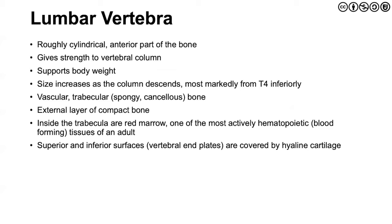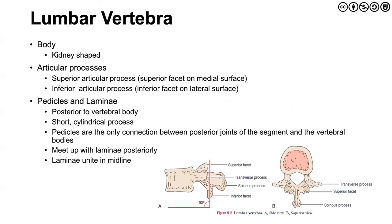The superior and inferior surfaces are covered by hyaline cartilage. The body is more kidney-shaped. The articular processes are paired with both superior and inferior. The pedicles and lamina are posterior to the vertebral body — they're short, and the pedicles are the only connection between the posterior joints of the segment and the vertebral bodies. The lamina unites at midline where we see our spinous process, and is an area where we can provide force during manual intervention. The lamina also comes into play with a laminaplasty — a decompression intervention surgically performed to provide relief to the central canal if someone is dealing with stenotic features or other age-related changes.